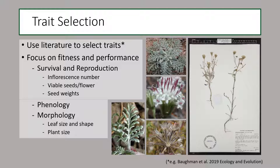Another step of this project was deciding which traits we were going to measure for the garden plants. We did this by combing through the literature to help us select a suite of traits related to the fitness and performance of the plants, as well as those associated with local adaptation. We selected relevant traits that include fitness measures like seed weight and inflorescence number, a variety of phenophase measures, and morphological characteristics related to performance.